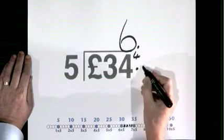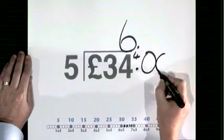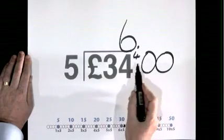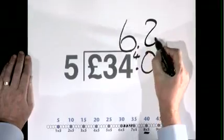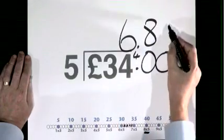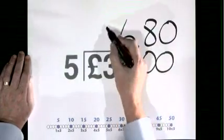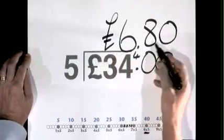Decimal. Pennies. 5 goes into 40, 8 times. 5 goes into 0, no times. £6.80.